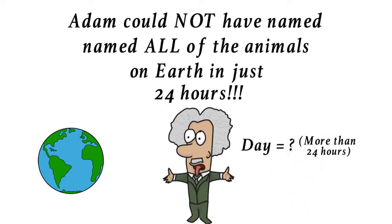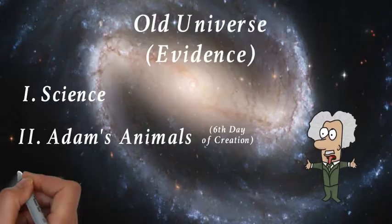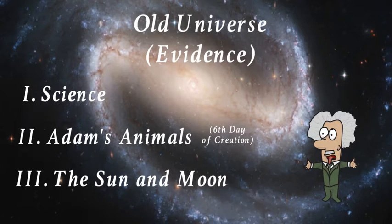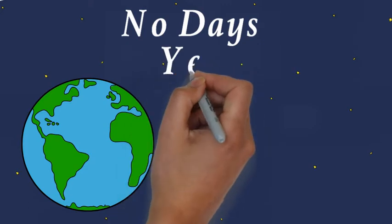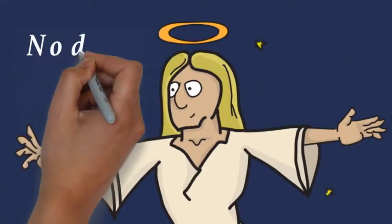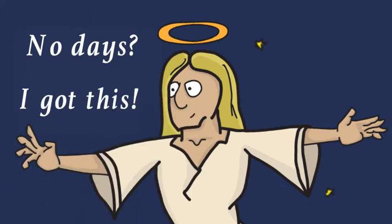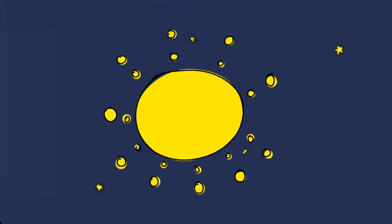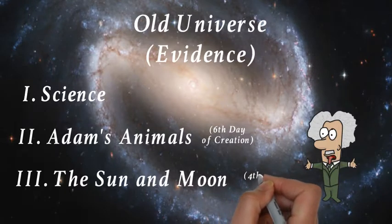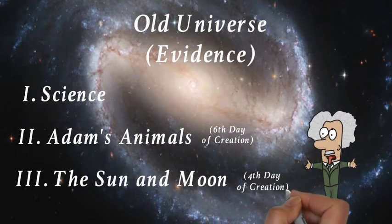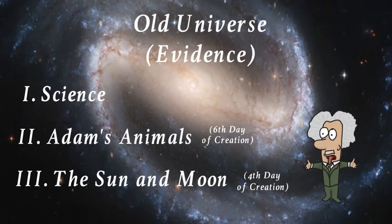The last piece of evidence I'll mention in this video for an older universe is actually based more on common sense than anything else. It has to do with the fourth day. You see, it wasn't until the fourth day that God made the sun and moon in order to separate day and night. So, here's the question. How could there be three days before the sun and moon existed if the sun and moon are the very things that separate day and night? Well, once again, the old earthers say that it's simple. The word yom didn't mean 24 hours. It meant a period of time. If the word day here actually means a period of time, then it wouldn't matter if the sun and the moon were created later.